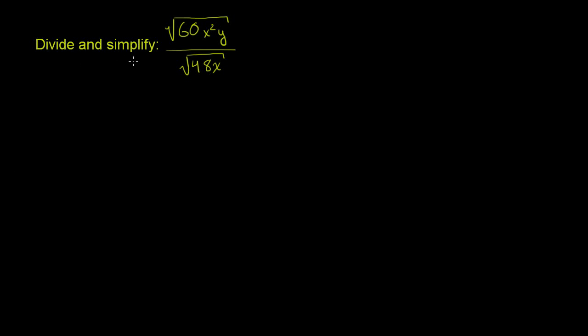We're asked to divide and simplify. We have one radical expression over another radical expression. The key to simplify this is to realize if I have the principal root of x over the principal root of y, this is the same thing as the principal root of x over y.